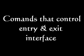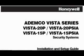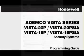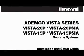Welcome to basic setup of the VISTA 20P Home Alarm System Part 13. This video will discuss the commands that control your entry and exit interface with your alarm. You will see excerpts out of two different documents. The programming guide tells you what buttons to push, but does a terrible job of telling you what the command is used for. To find that information, you have to look it up in the installation and setup guide, so we'll work out of both documents.